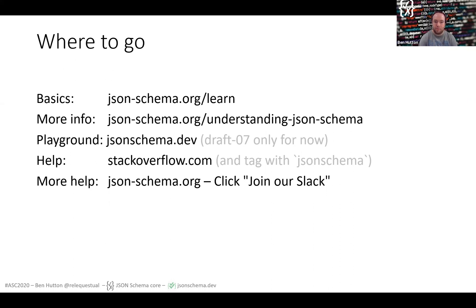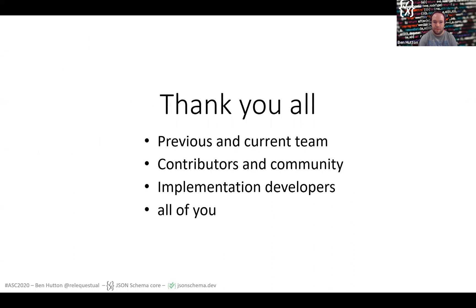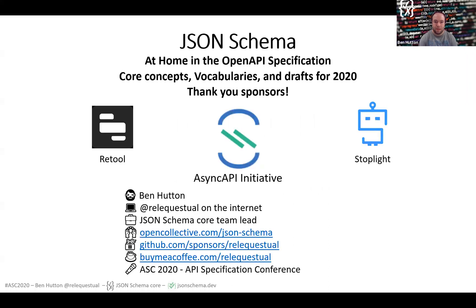If you're looking for even more help, json-schema.org — join our Slack server. It's got a vibrant community and we're always on hand to help out. Thank you to the previous and current team, the contributors in the community, implementation developers, and all of you. Finally, I'd like to mention all of our sponsors: Async API Initiative, Stoplight, and our new sponsor, Retool. Hopefully I'll be on hand to answer any questions you might have. Thank you for listening.